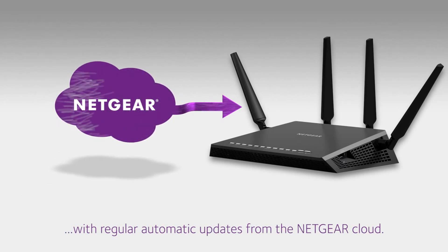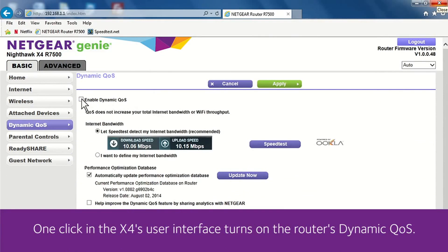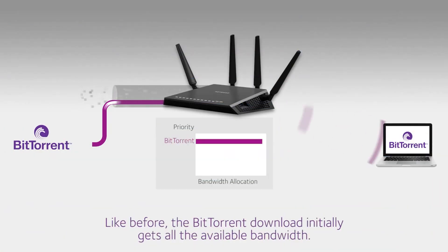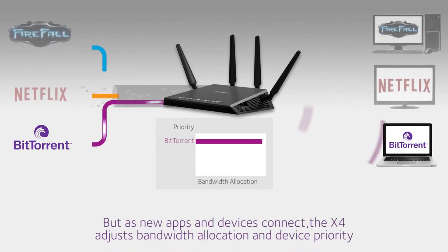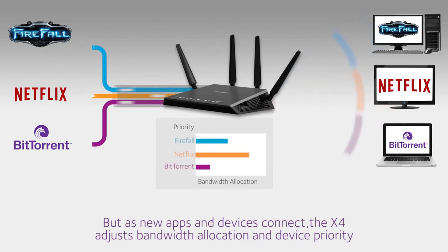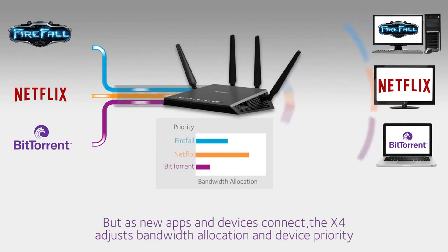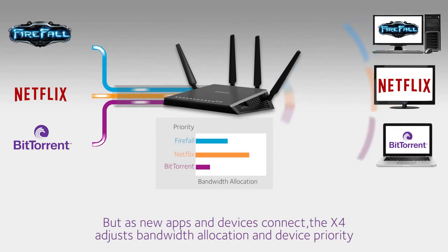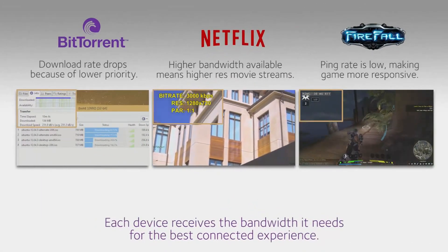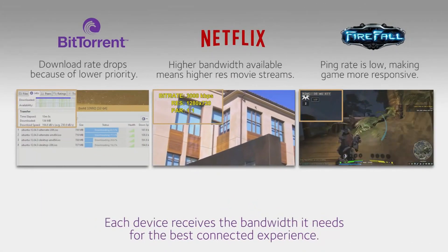Now let's see the difference Dynamic QoS makes. One click in the X4's user interface turns on the router's Dynamic QoS. As before, when the laptop begins the BitTorrent download, the router allocates the available bandwidth for it. But now, when the Netflix video and the online game begin, the X4 adjusts the bandwidth allocation, giving less bandwidth and lower priority to the BitTorrent download.